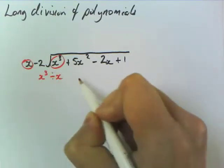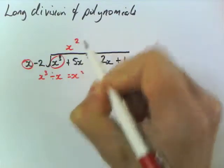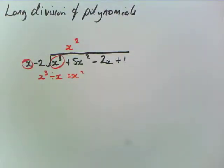So x cubed divided by x, and that equals x squared. So you write that on the top here. So that's step one.